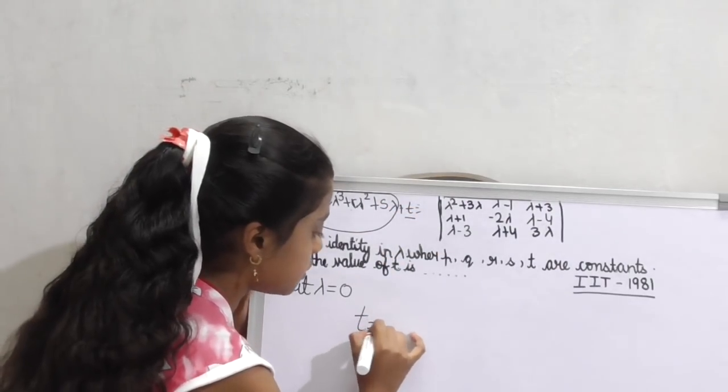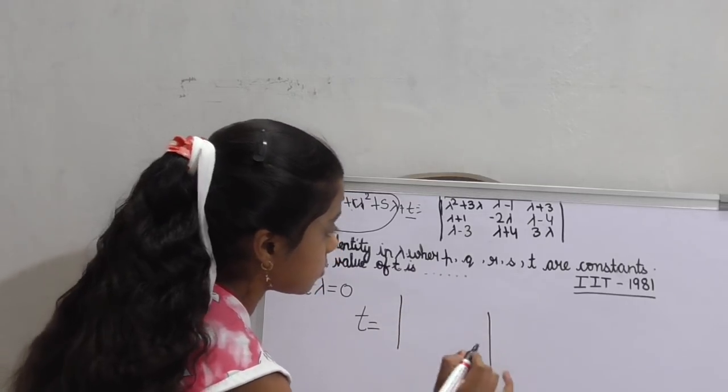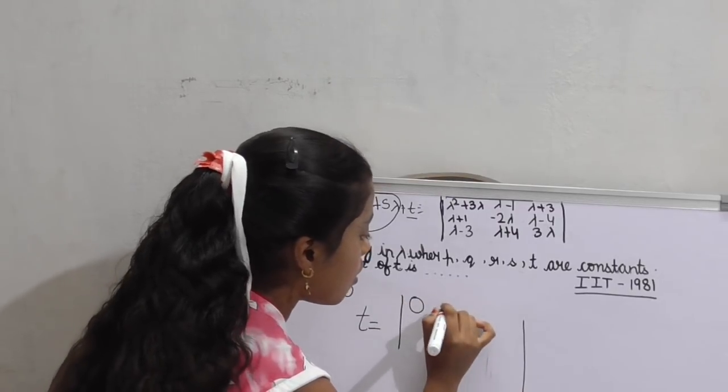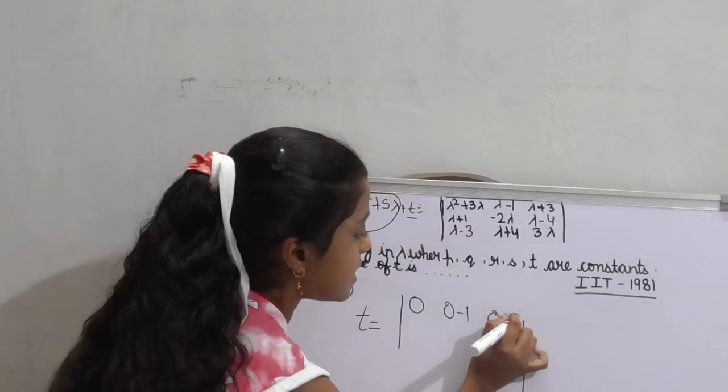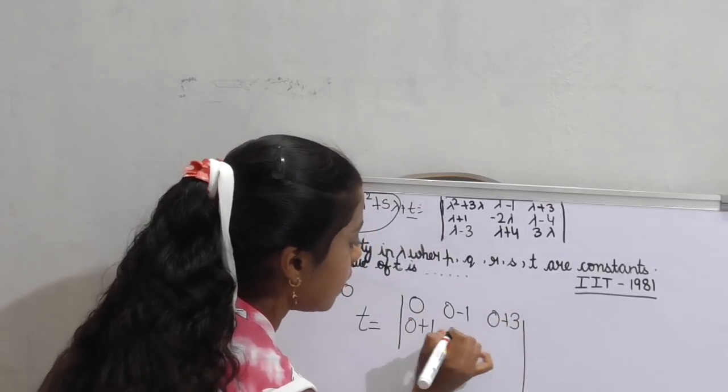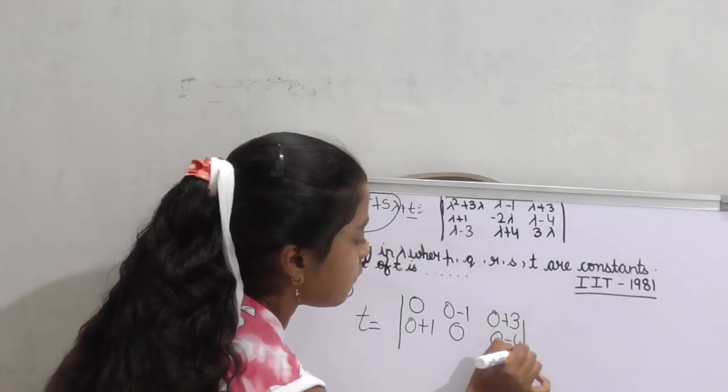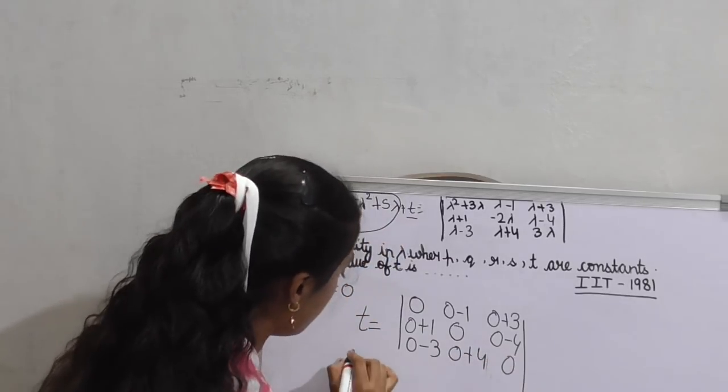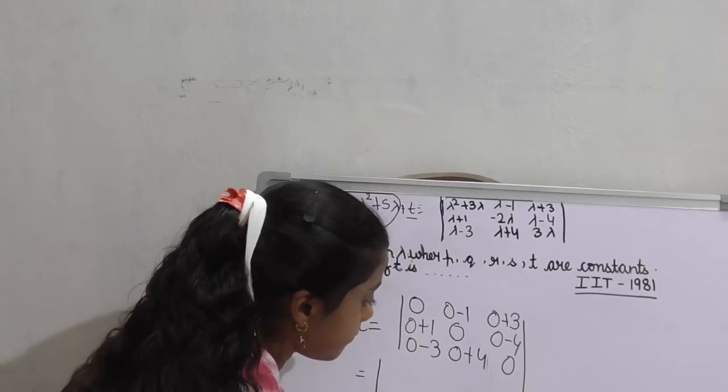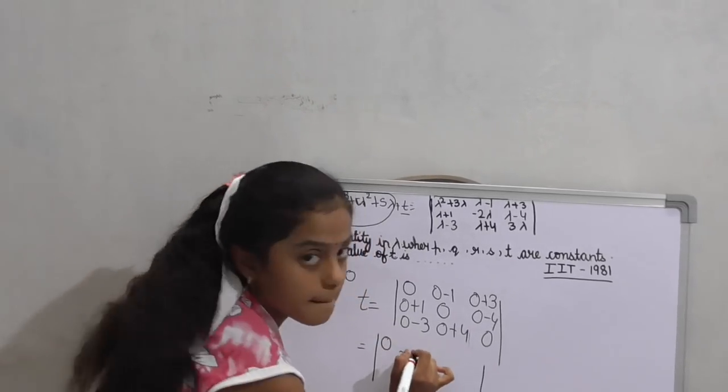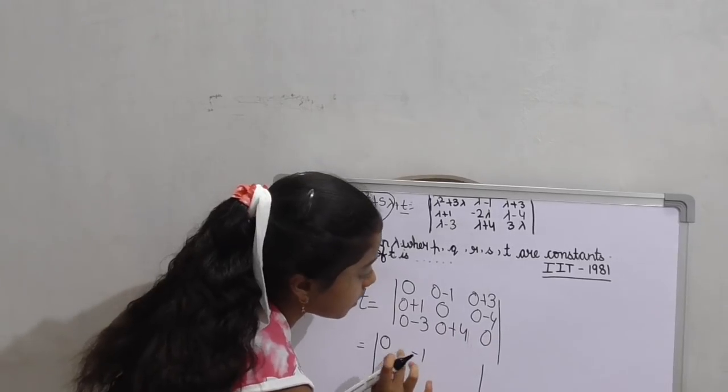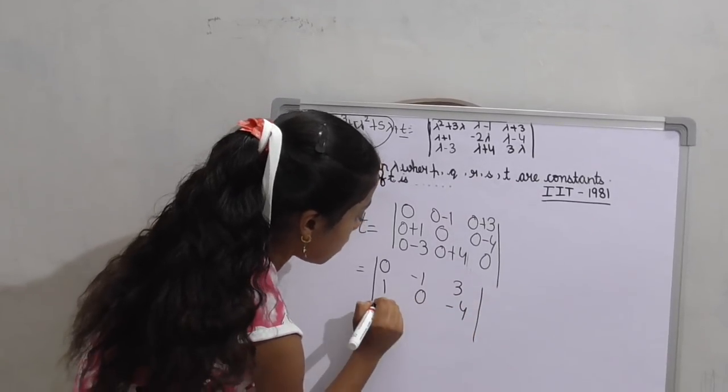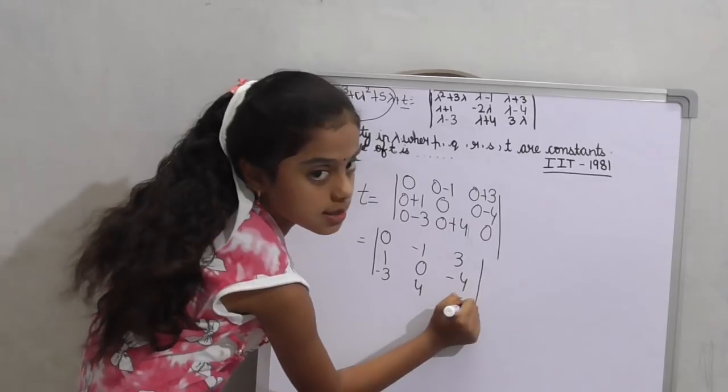T is equal to the determinant: 0, 0 minus 1, 0 plus 3, 0 plus 1, 0, 0 minus 4, 0 minus 3, 0 plus 4, 0, 0, 0 minus 1. Simplified: 3, 1, 0, minus 4, minus 3, 4, 0.